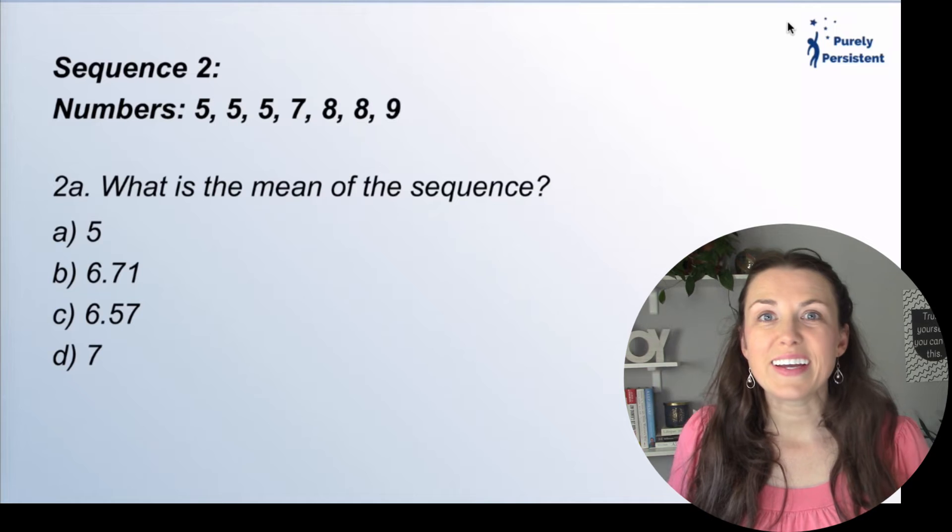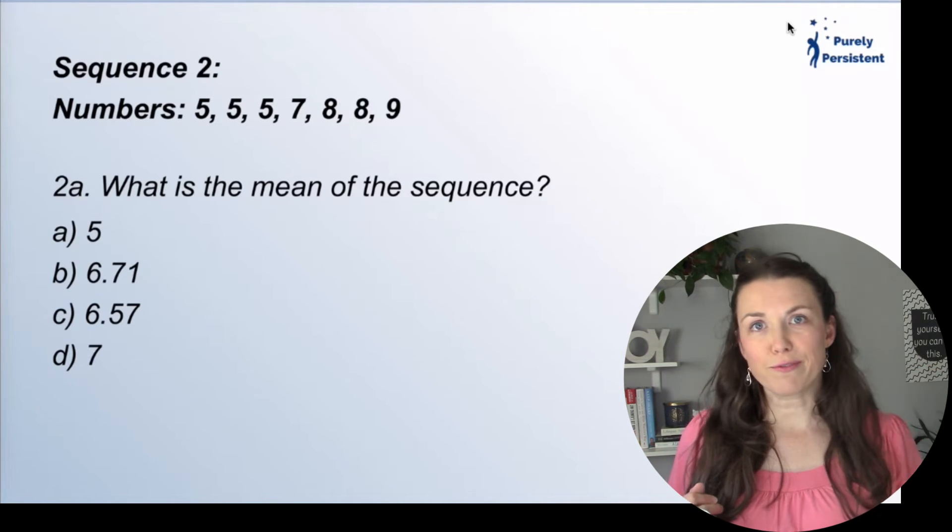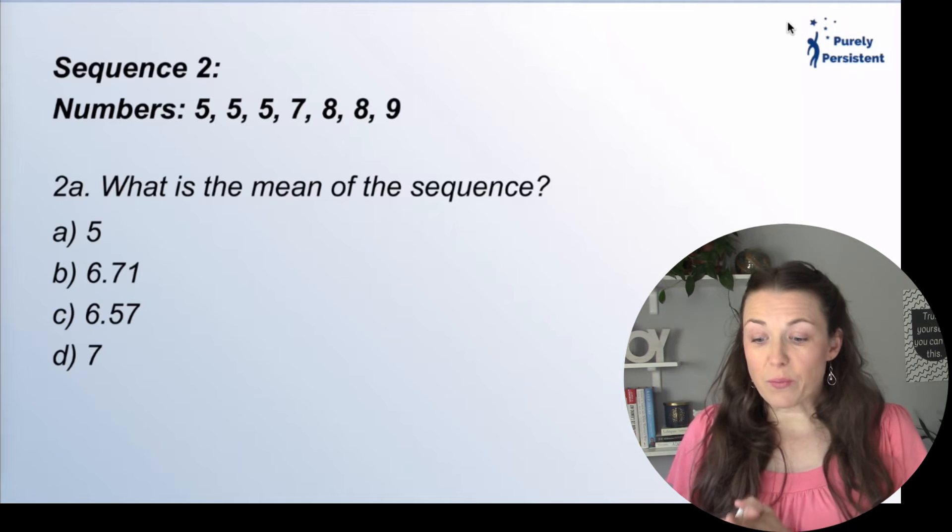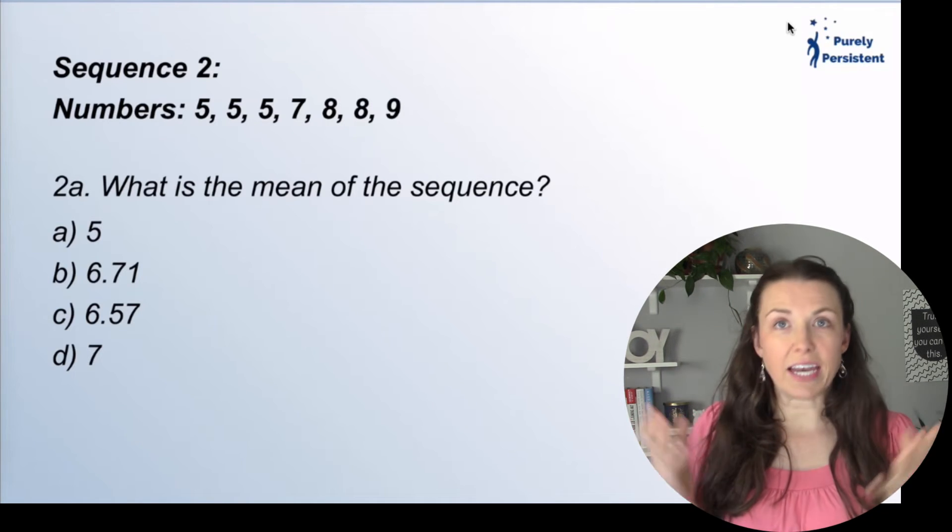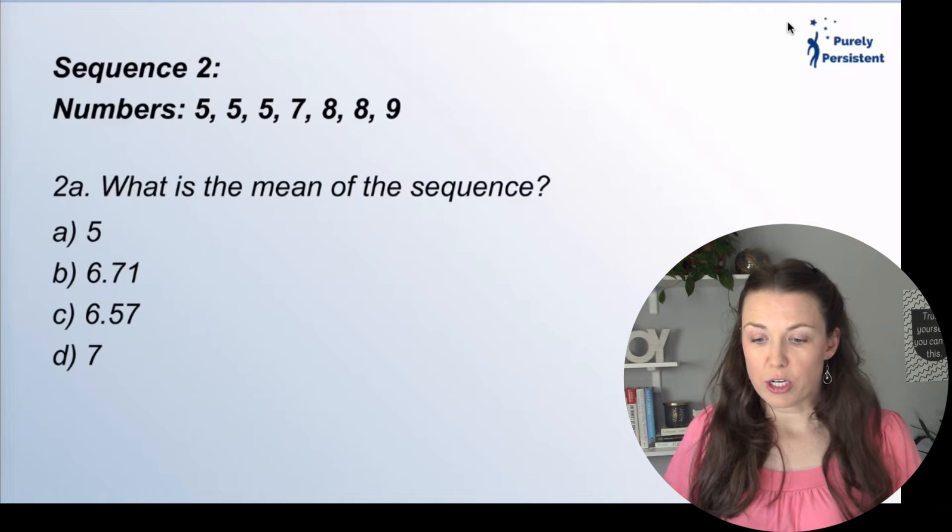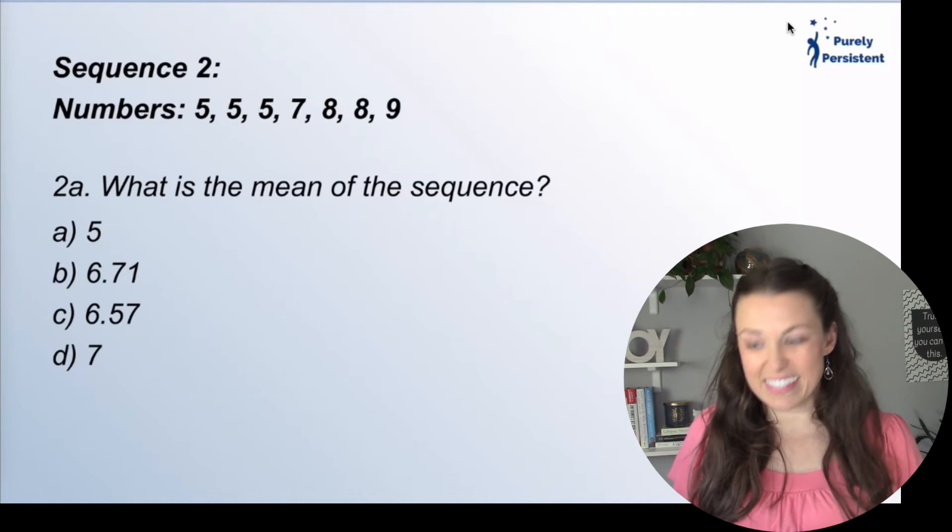Sequence number two. In the free PDF, there are actually five sequences. So you can really get a chance to practice up. All right. What is the mean of the sequence? Again, I'm going to add up all of my numbers together. So I'm going to go five plus five plus five plus seven plus eight plus eight plus nine.